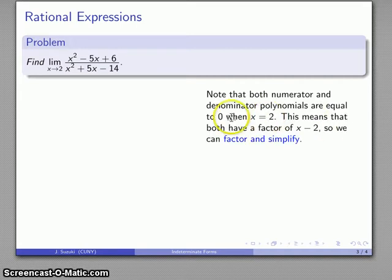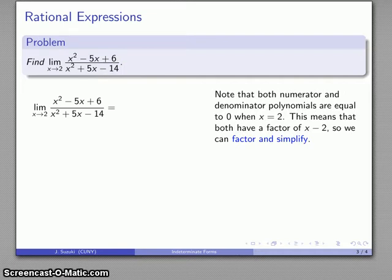In particular, because x equals 2 makes them both 0, they both have a factor of x minus 2, which means that both of these can be factored, and both of these can be simplified. Now generally speaking, factoring is a very difficult problem, but we already know a factor. So let's go ahead and make use of that.